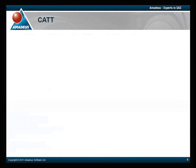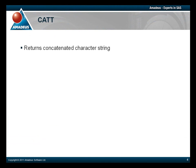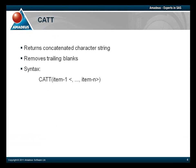The second function that we're going to look at is the CATT function. The CATT function is used when the user wants to concatenate more than one string together, removing trailing blanks in each string but keeping the leading spaces. The syntax for the CATT function is similar to the CAT function, where the only change is the function name.